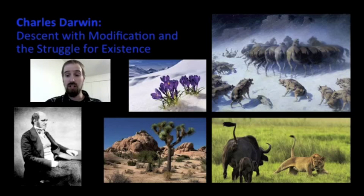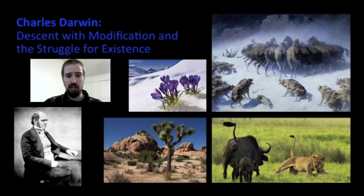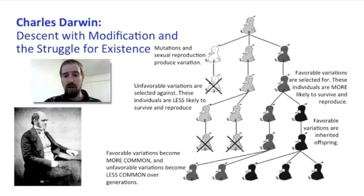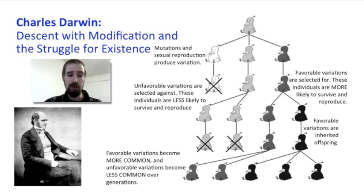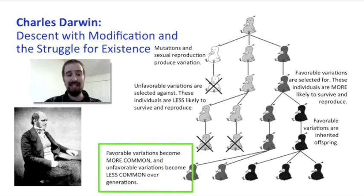It all comes down to the struggle for existence and descent with modification. Organisms struggle to survive, and only the fittest will survive to pass their traits on to the next generation. As these traits are passed from generation to generation by the survivors, they are modified by mutations and by the genetic recombination that occurs during sexual reproduction. In each generation, the most fit individuals will reproduce the most frequently and their variations will become more common in the population. The least fit will be selected out, will reproduce less frequently, and their variations will become less and less common.